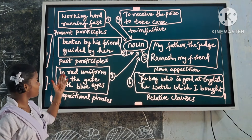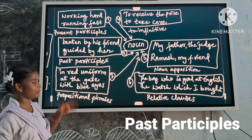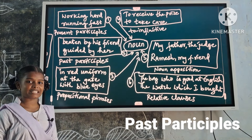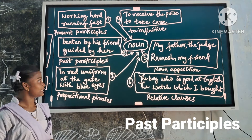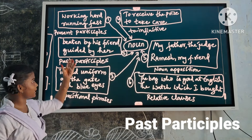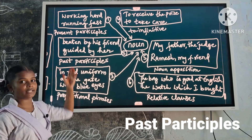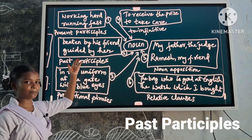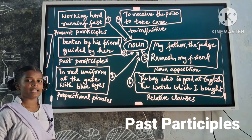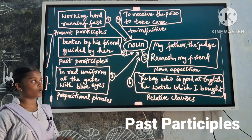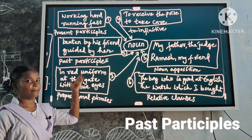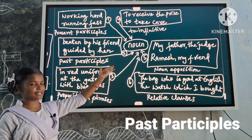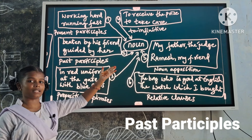Next one: past participles as post-noun modifiers. Examples: the boys beaten by his friend, the boys guided by her. These are noun modifiers because they describe the noun.